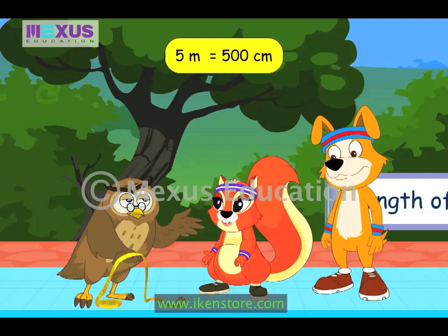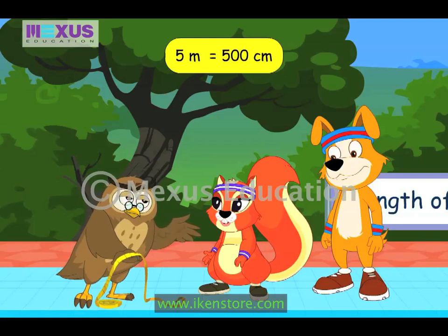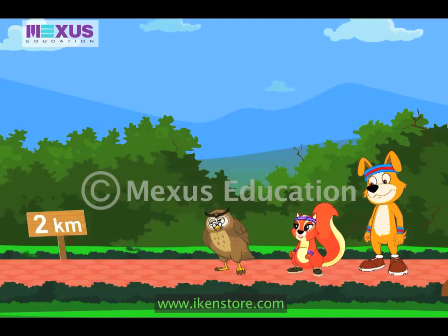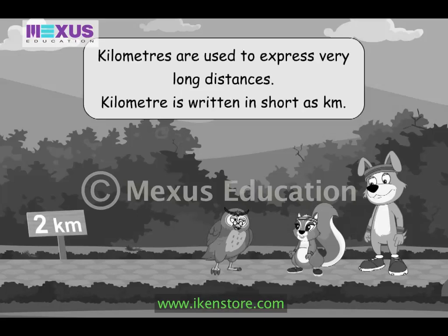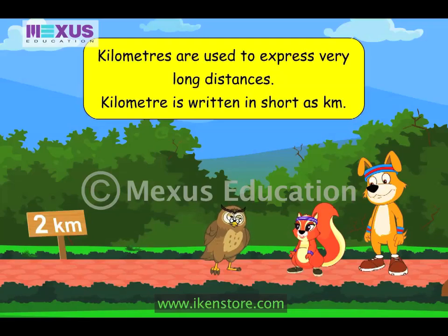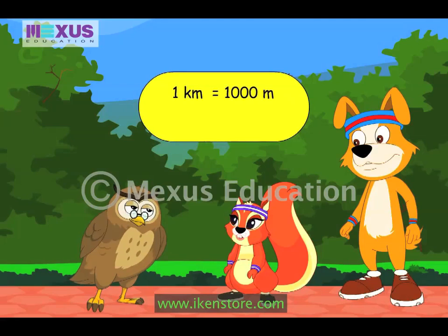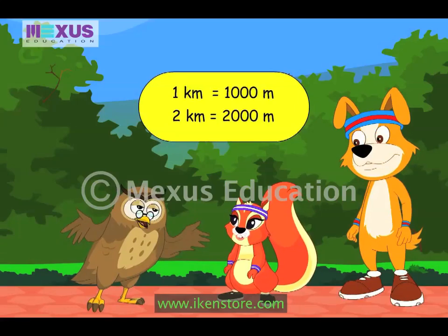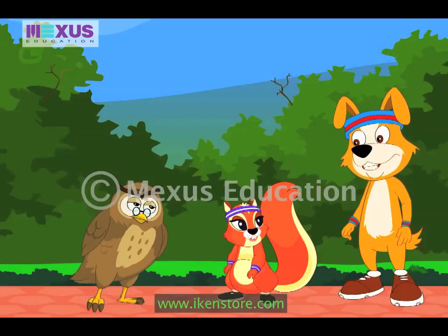Good! Now you know why we need bigger units. Let me show you a unit bigger than meter. Come with me. Look at this — this is the length of the jogging track. Km means kilometer. Kilometer is the unit used to measure very long distances — distances bigger than 1000 meters. Kilometers are written as Km. One kilometer is equal to 1000 meters, which means 2 kilometers is 2000 meters. That's very long! Mr. Owl, is this the reason that distances between cities are written in kilometers? I have seen that while traveling with my parents.